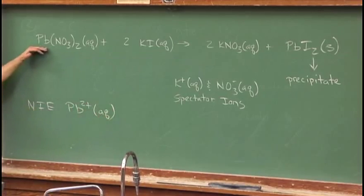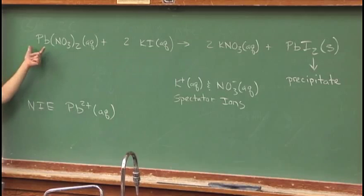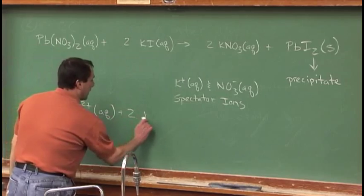Lead 2 plus is aqueous at the beginning because it was combined with the nitrate. It is 2 plus because each nitrate is minus 1. Gets together with a couple of iodides.